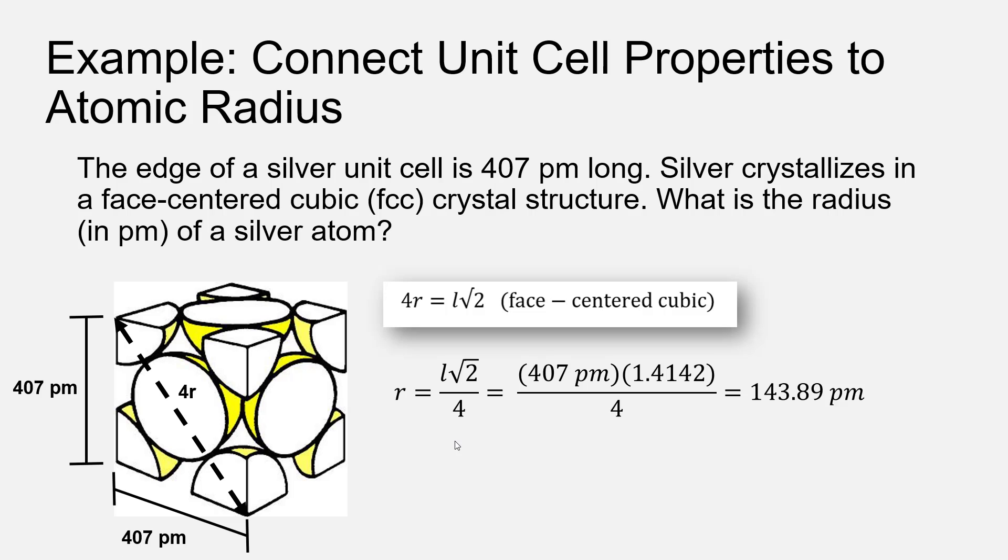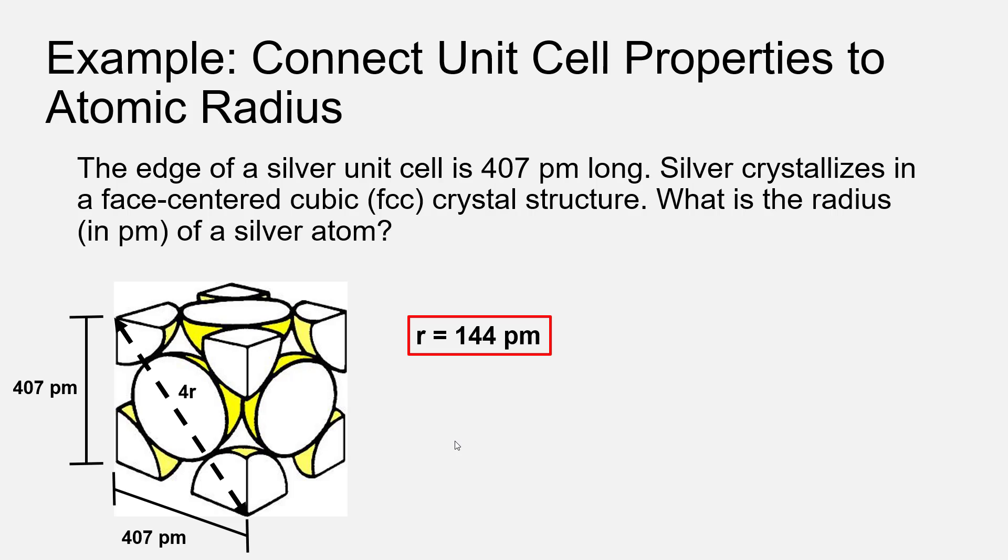Pulling in 407 picometers as the edge length, the square root of two is 1.4142, we divide that by four. 407 times 1.4142 divided by four gives us an atomic radius for silver of 143.89 picometers, which is well in line with the typically given atomic radius for silver of 144 picometers to three significant figures.